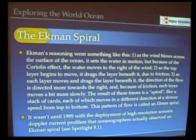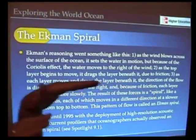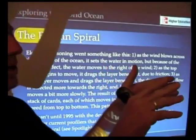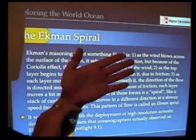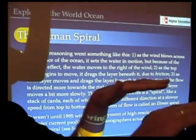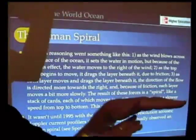So his reasoning was somewhat like this. As the wind blows across the surface of the ocean, it sets the ocean in motion. But the ocean doesn't move directly in the direction of the wind. It moves off slightly to the right. And as it moves off slightly to the right, it drags the layer beneath it, which even moves more to the right and more to the right and more to the right.